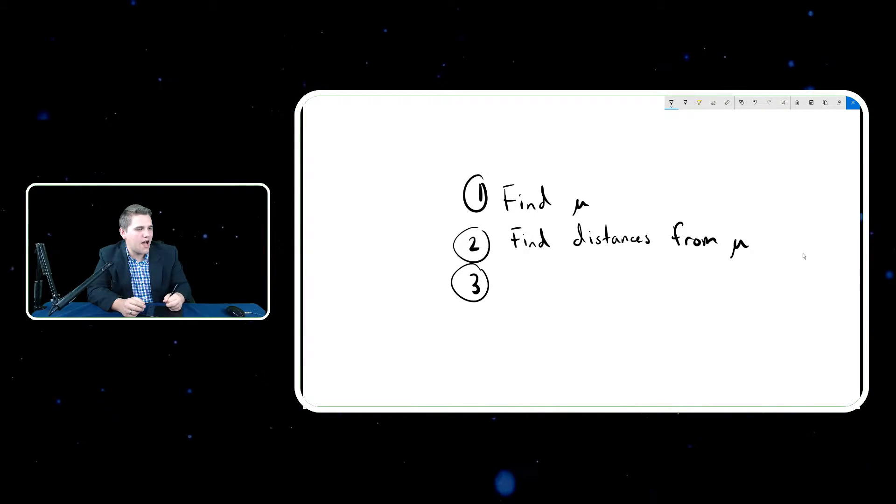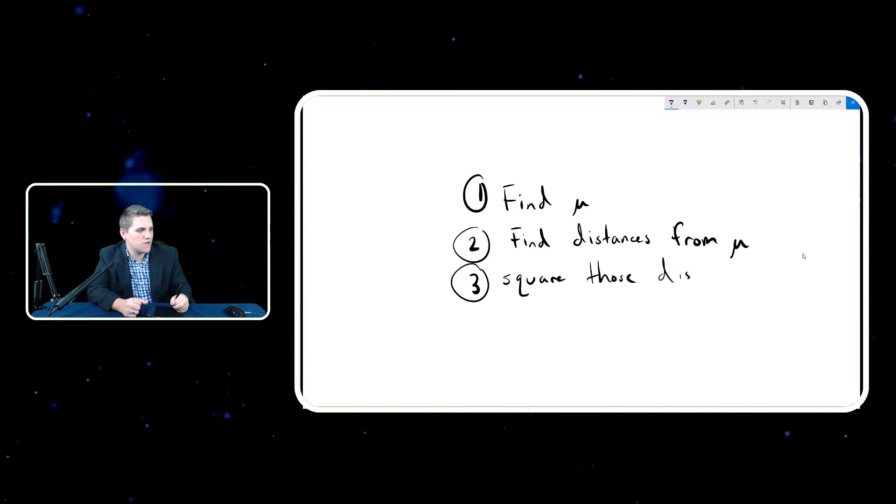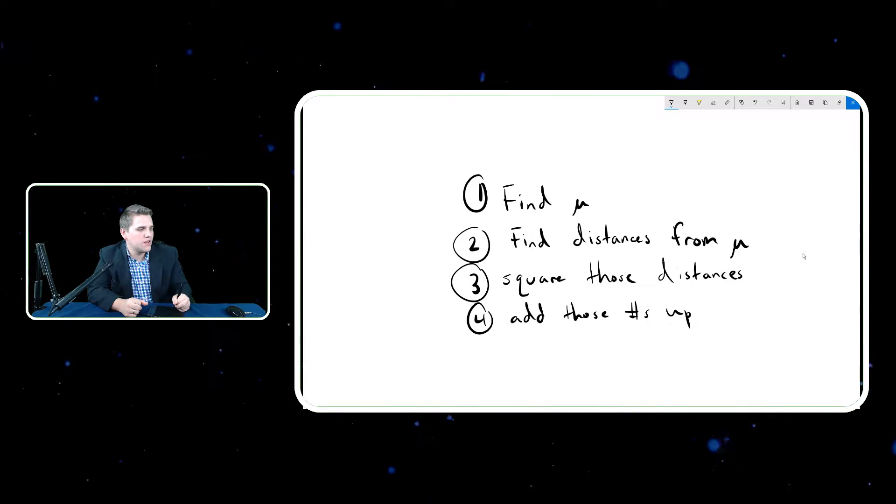And then the third step, I square those distances. The last step is I add those numbers up and divide by n minus one, and then last but not least, I square root.